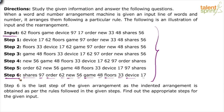Now that we have understood the output logic, let us look at the step-by-step rearrangement process. Look at step one and compare it with the input. In step one, the word 'device' has been brought to the first position and the number 17 has been brought to the next position. So 'device' and 17 — a pair of one word and one number — have been brought to the first positions, followed by everything else as it is: 62, floors, game, 97, order, new, 33, 48, shares, 56.